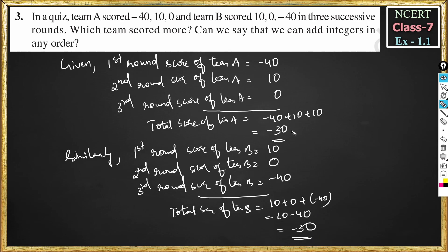If you observe, total score of team A and total score of team B is the same. So, for the question — which team scored more? — the answer is: both teams scored equal score.